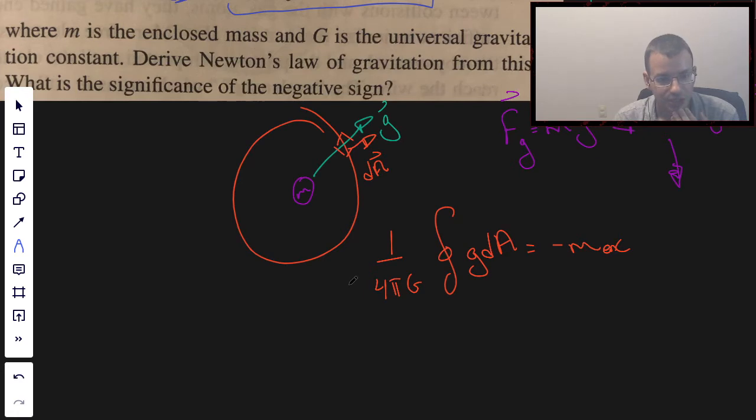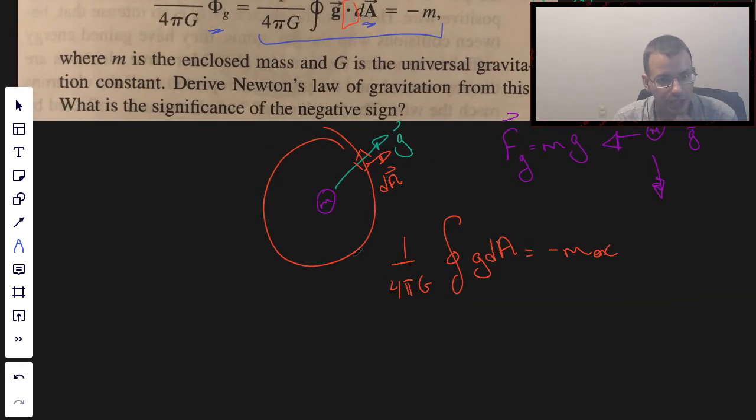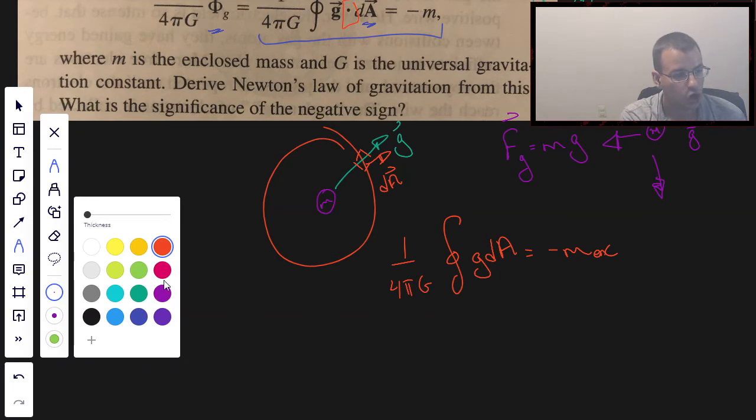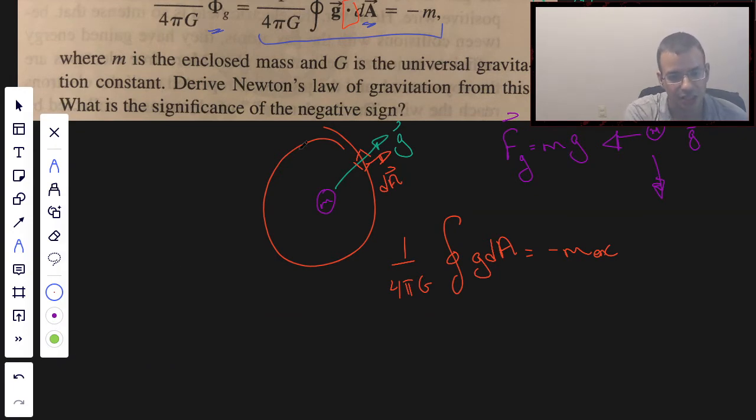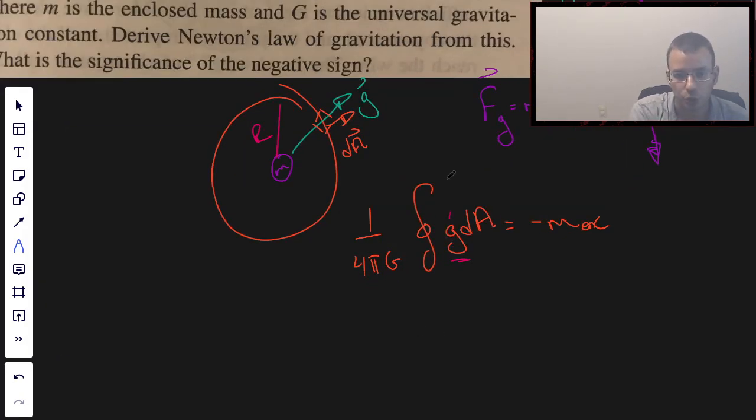One thing to note that we probably assume is that the gravitational field is going to depend on radius. The further away you are from a mass, the stronger the gravitational field is going to be. So for a given radius, and this Gaussian shape, which is a sphere, has a constant radius. Therefore, since that has a constant radius, it's going to have a constant gravitational field at the surface. So we can pull this constant outside of our integral.